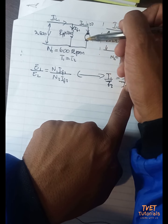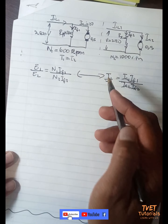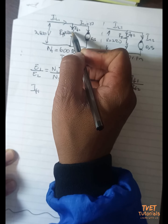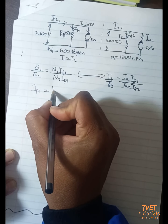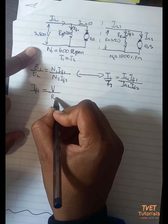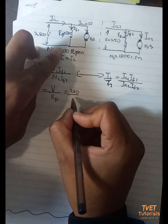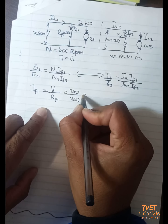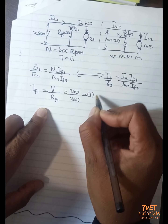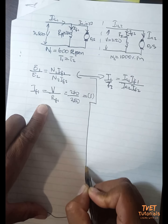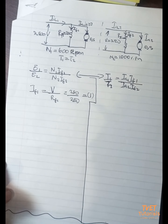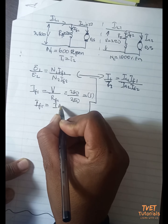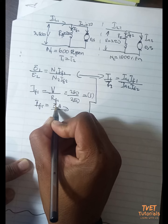We can easily calculate If1 — the current through the shunt field — as the supply voltage V divided by Rf1, which is 250 divided by 250, giving us a field current If1 equal to 1 ampere.